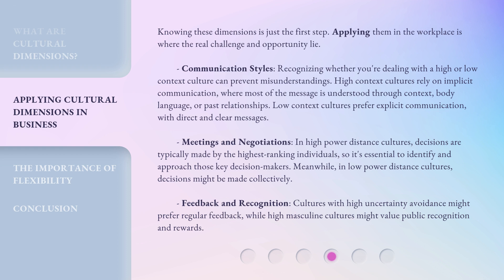Meetings and Negotiations — in high power distance cultures, decisions are typically made by the highest ranking individuals, so it's essential to identify and approach those key decision makers. Meanwhile, in low power distance cultures, decisions might be made collectively. Feedback and Recognition — cultures with high uncertainty avoidance might prefer regular feedback, while high masculine cultures might value public recognition and rewards.